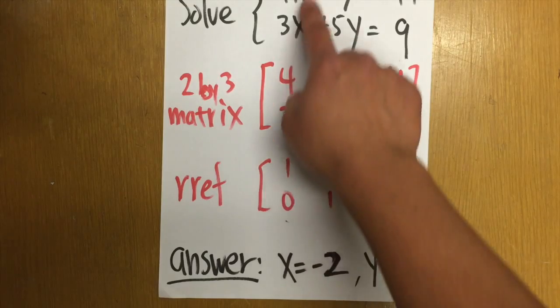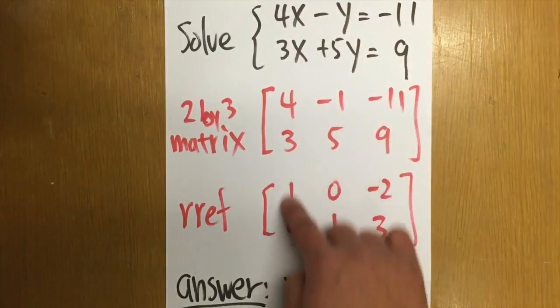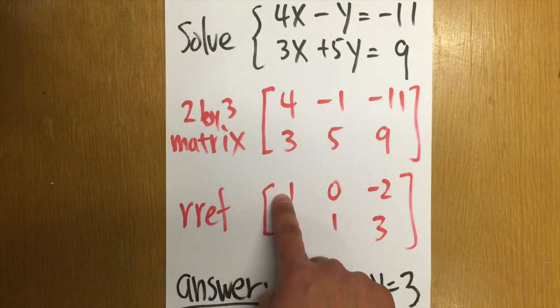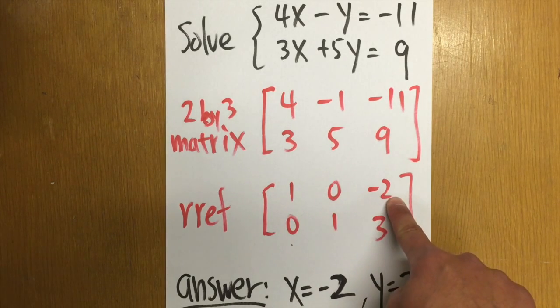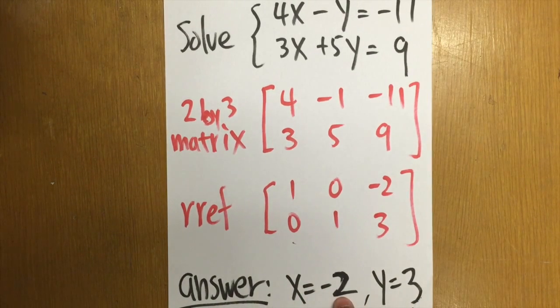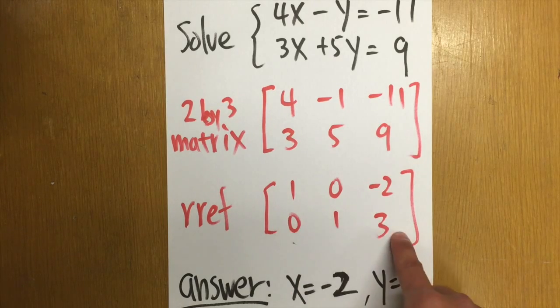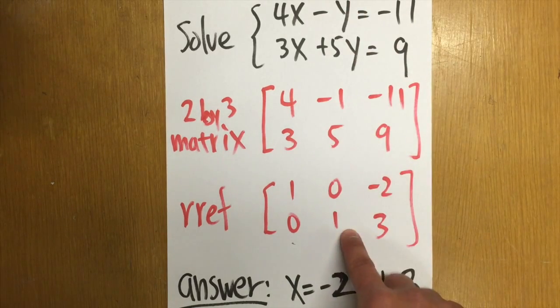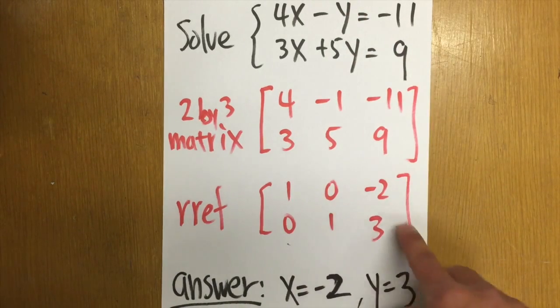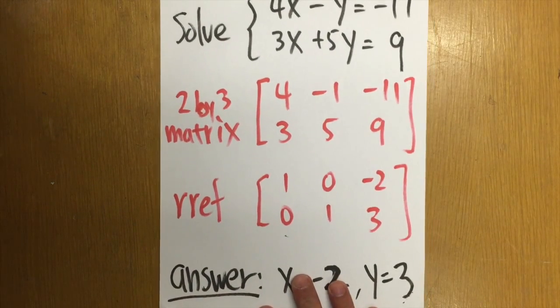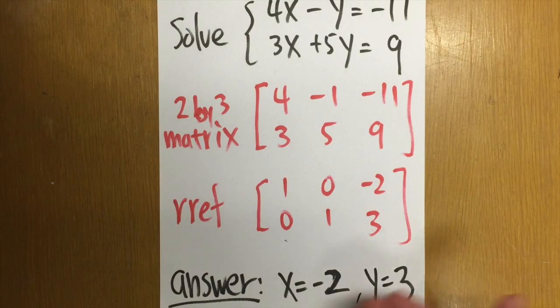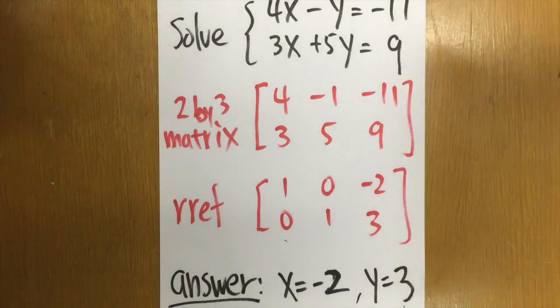Because the first column right here represents the X. This means we have 1X. No Y is equal to negative 2. That means X is equal to negative 2. And then for the second row, this is the Y column. No X, 1Y, and we have 3. That means Y is equal to positive 3. And then there we have it. X is equal to negative 2. Y is equal to positive 3. For this system of equation. That's it.